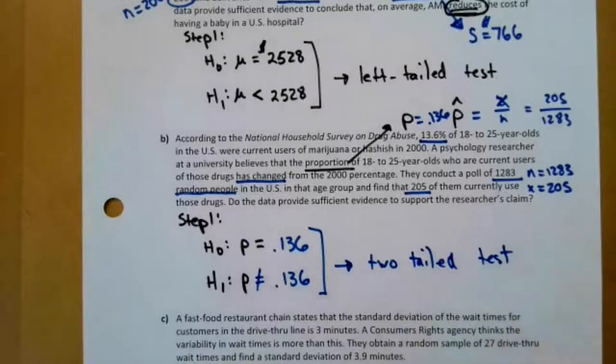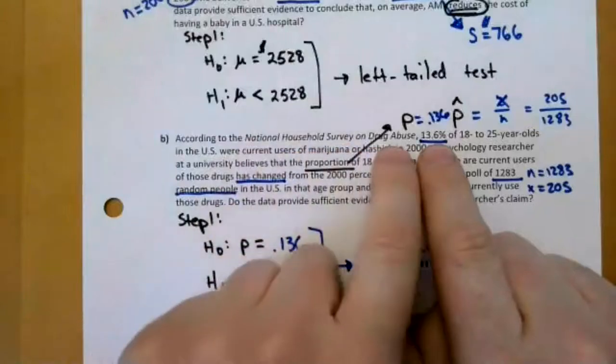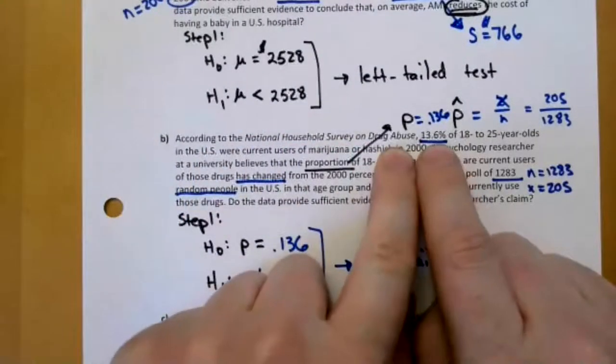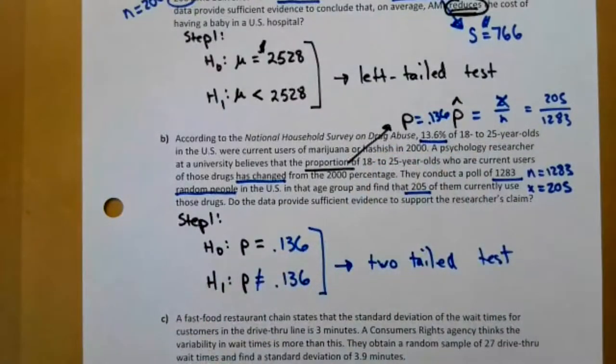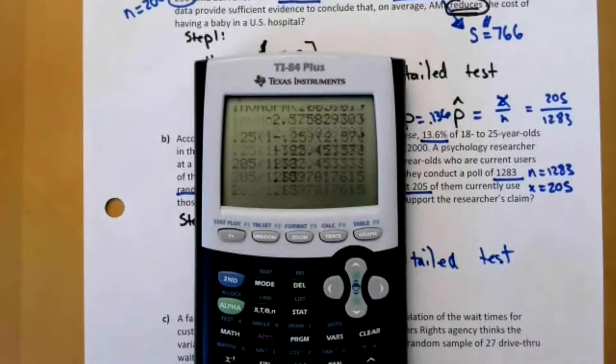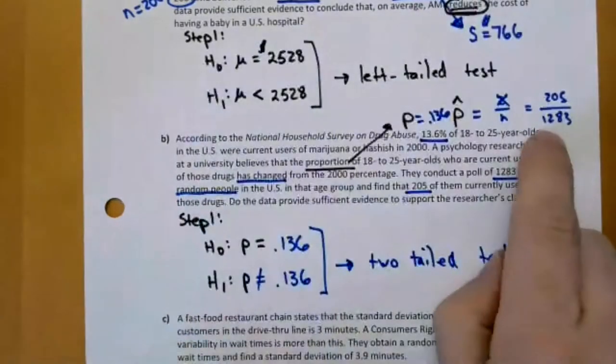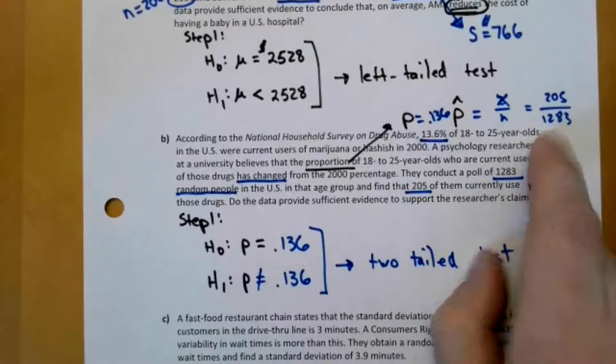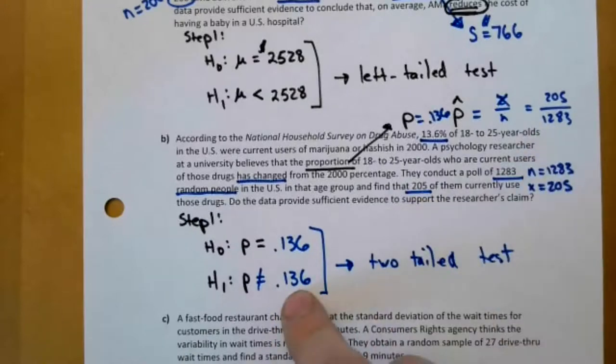A psychology researcher at a university believes that the proportion of these people who are current users of those drugs has changed. Does that mean less than, greater than, or not equal to? Not equal to. That means this is going to be a two tailed test. That 205 divided by 1283 is a number higher, 0.15978 something. So one of the things to note is the sample value we have for P hat is a number that's different. So we do have evidence that it's changed. We're just going to have to test if that's statistically significant. And that's what's coming in 10.2.